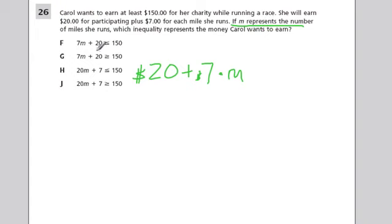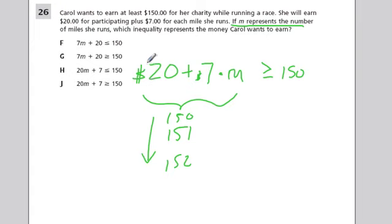Here we know that whatever she's making, it says she has to earn at least $150, so whatever this is it's got to be at least $150. It could be $150, it could be greater than or equal to $150. So whatever this is, it could be $151, $152, but it could be $150. Her goal is to get $150 or more dollars, so the $20 plus the $7 per mile has to be bigger than or equal to $150. That's her goal, and they wrote it as this right here. All they did was switch the order of these two terms, and that's okay because we're adding.